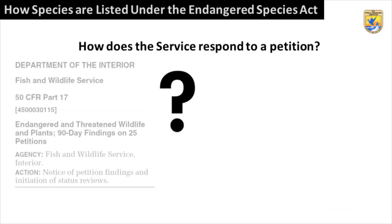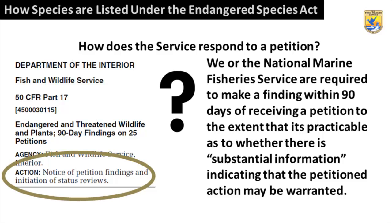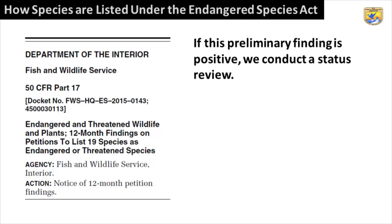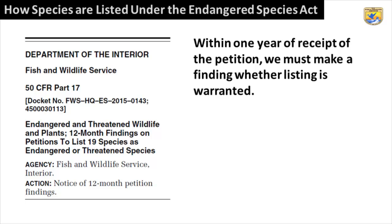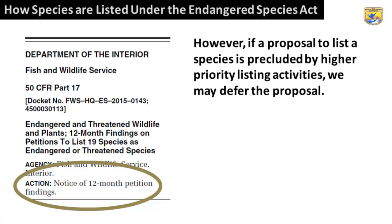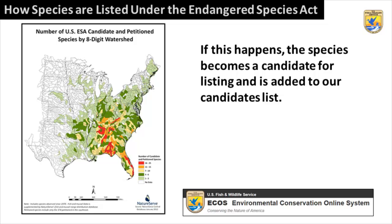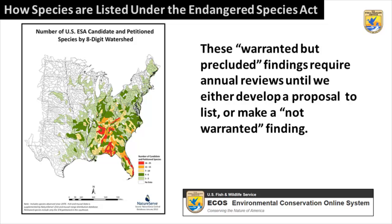How does the service respond to a petition? The ESA requires that we make and publish specific findings on a petition. We, or the National Marine Fisheries Service, are required to make a finding within 90 days of receiving a petition — to the extent practicable — as to whether there is substantial information indicating that the petition action may be warranted. If this preliminary finding is positive, we conduct a status review. Within one year of receiving the petition, we must make a finding whether the listing is warranted. A positive 12-month finding may be incorporated into a proposed rule to list a species. However, if a proposal to list is precluded by higher priority listing activities, we may defer it — this is known as a finding of Warranted but Precluded. The species then becomes a candidate for listing, and these warranted but precluded findings require annual reviews until we either develop a proposal to list or make a not warranted finding.